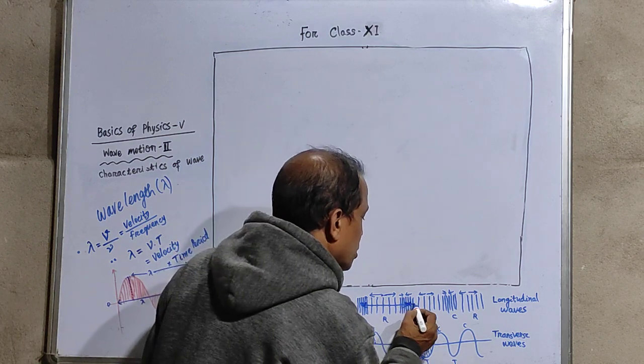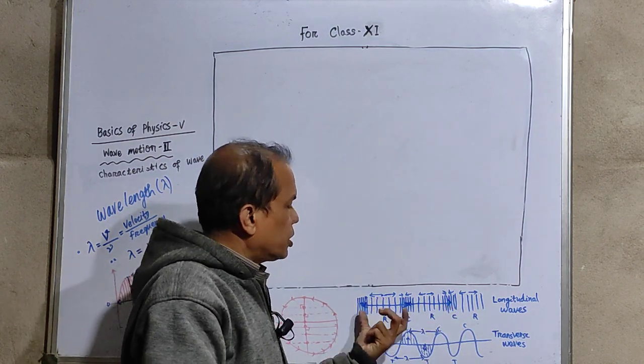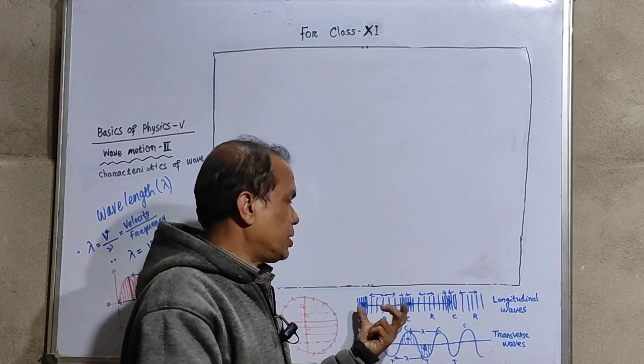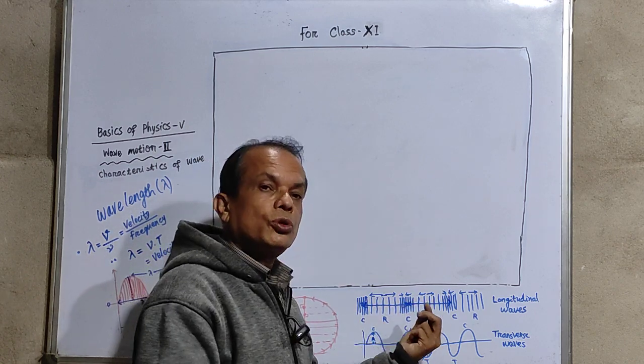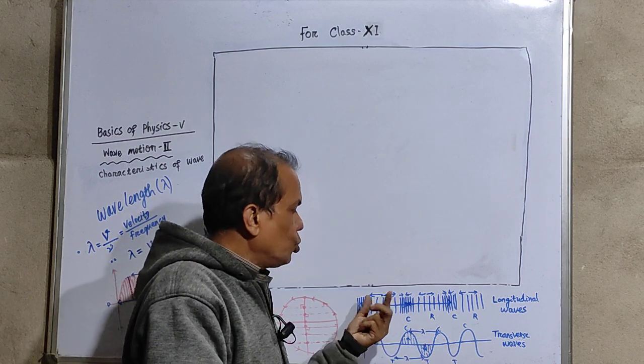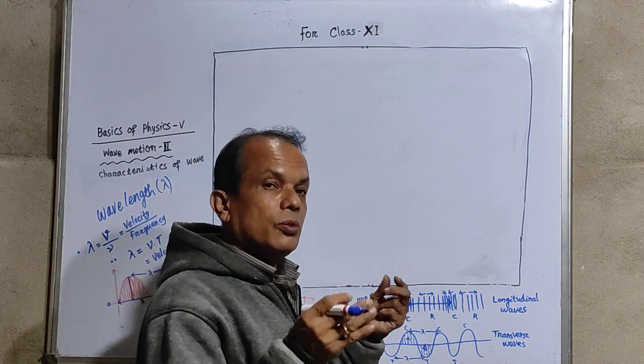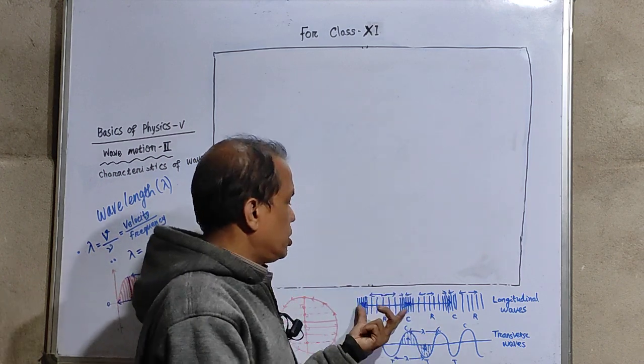Again after this distance, it comes to its original position again. So after successive covering of distances, the wave always assumes its original position and this length between two such equivalent points or two points in same phase is known as wavelength.